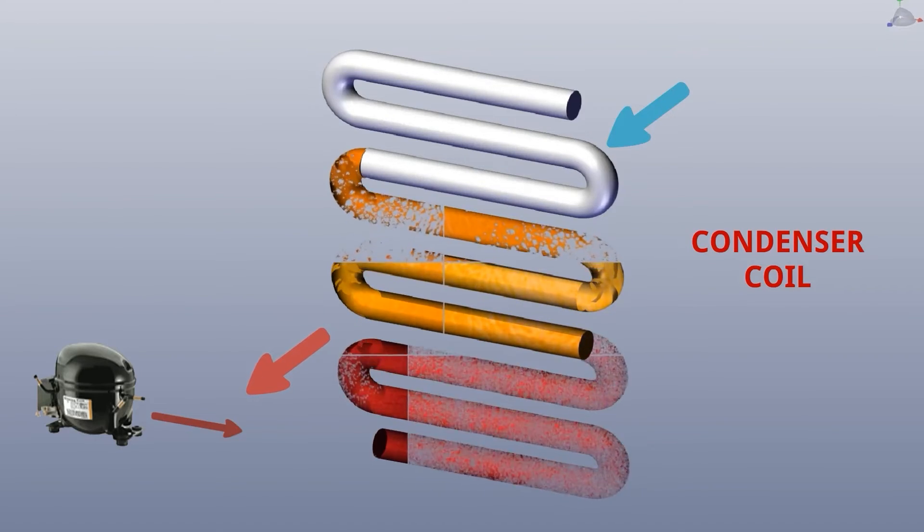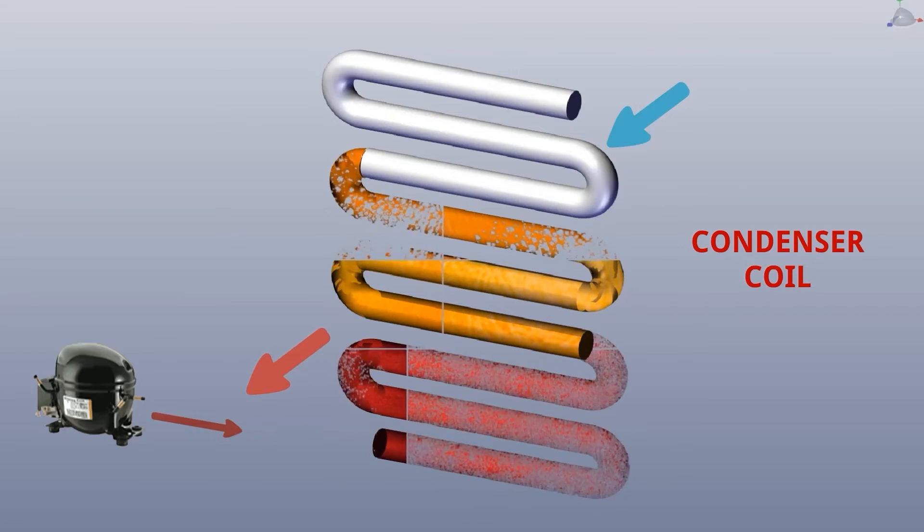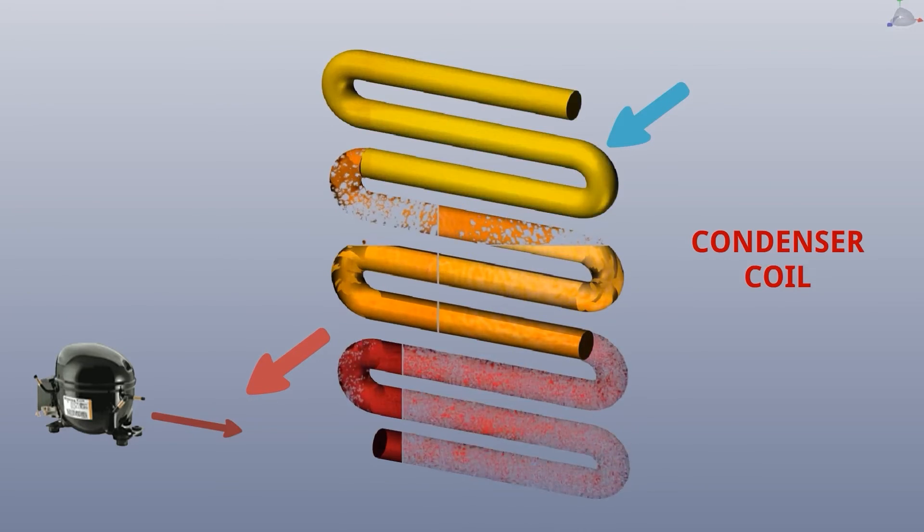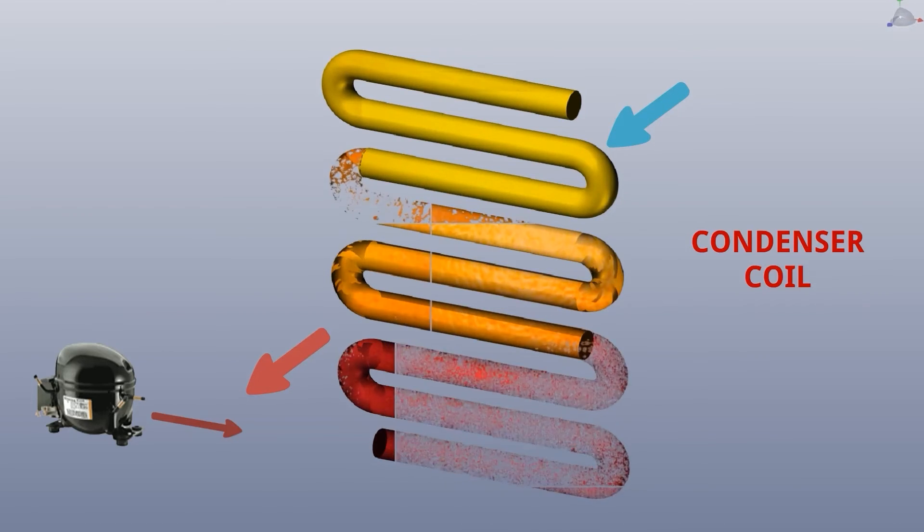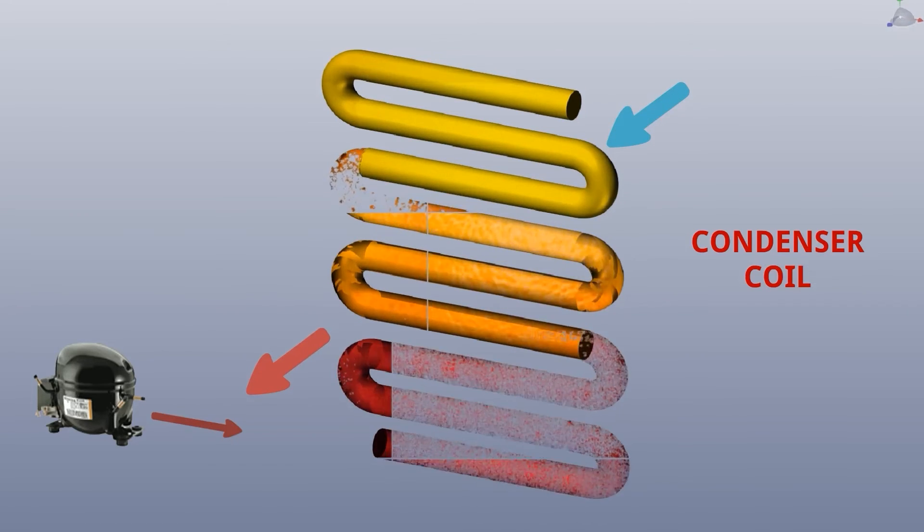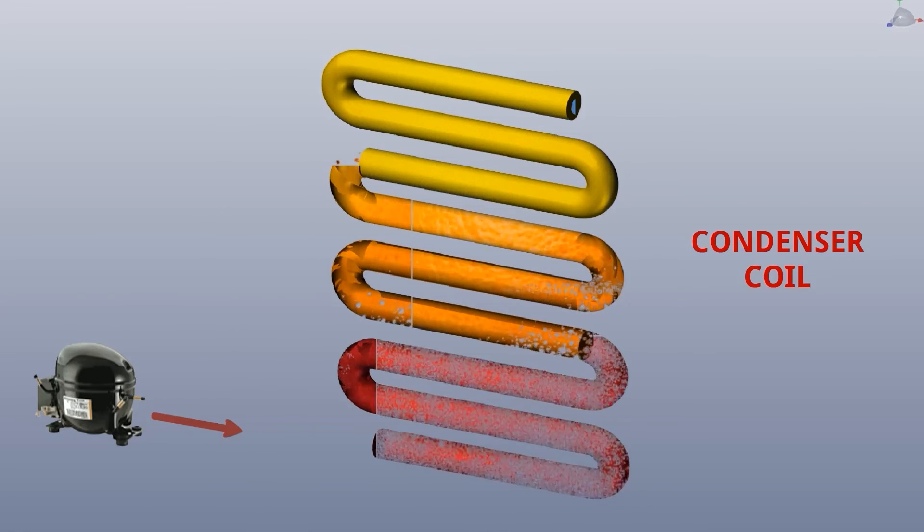The reduction of temperature makes the superheated refrigerant vapor into saturated vapor. Further reduction of heat changes the vapor into liquid. This is the liquid; however, it has a small amount of vapor as well at the outlet of the condenser coil.